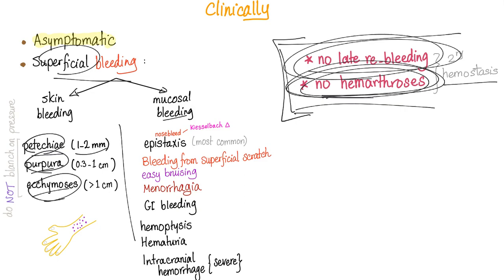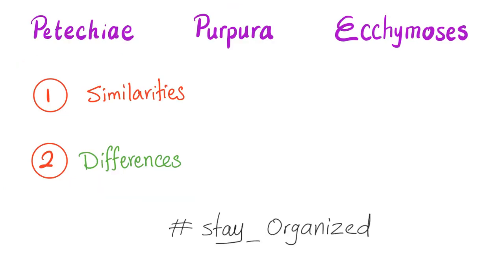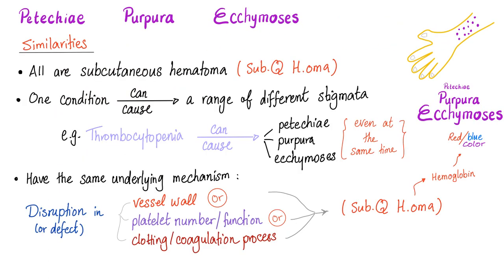Those deep bleeding symptoms are only seen in secondary hemostasis defects such as hemophilia. Now, petechiae, purpura, ecchymosis — let's talk about the similarities and then the differences. All of them are subcutaneous hematomas. One condition can have a range of different stigmata. They share the same underlying mechanism: a disruption of the vessel wall, or platelet function, or the clotting and coagulation process.